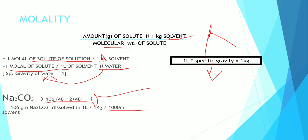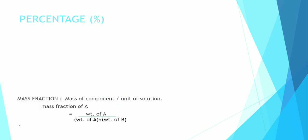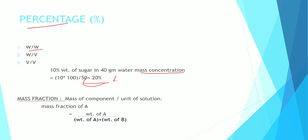Final, percentage. Three types: weight by weight, weight by volume, and volume by volume. Example: 10 percent weight of sugar in 40 grams of water mass concentration is 20 percent. Where does 50 come from? It comes from 40 plus 10.